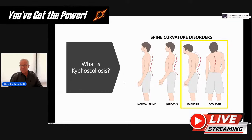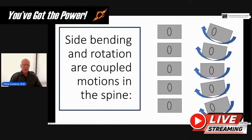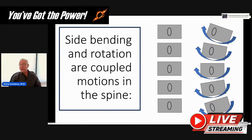The scoliosis piece tends to be usually genetic. It's more common in tall women than in shorter women or in men. The first thing you have to know is that side bending and rotation in the spine are coupled motions. What that means is if you side bend the spine, you always get rotation with it — it's the way the spine is designed. It's a design constant. So if you get side bending or scoliosis, you're going to get rotation as well.